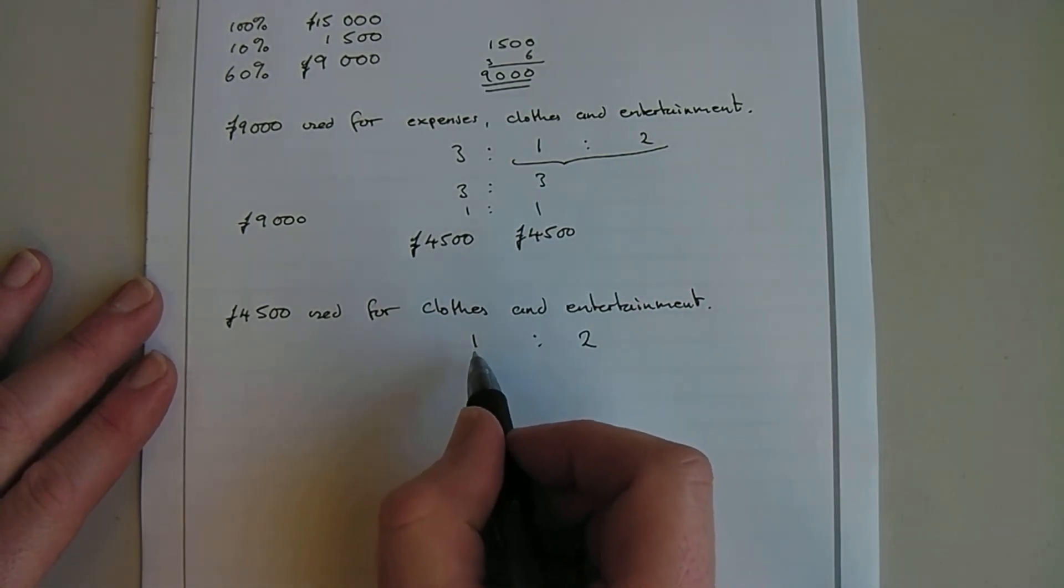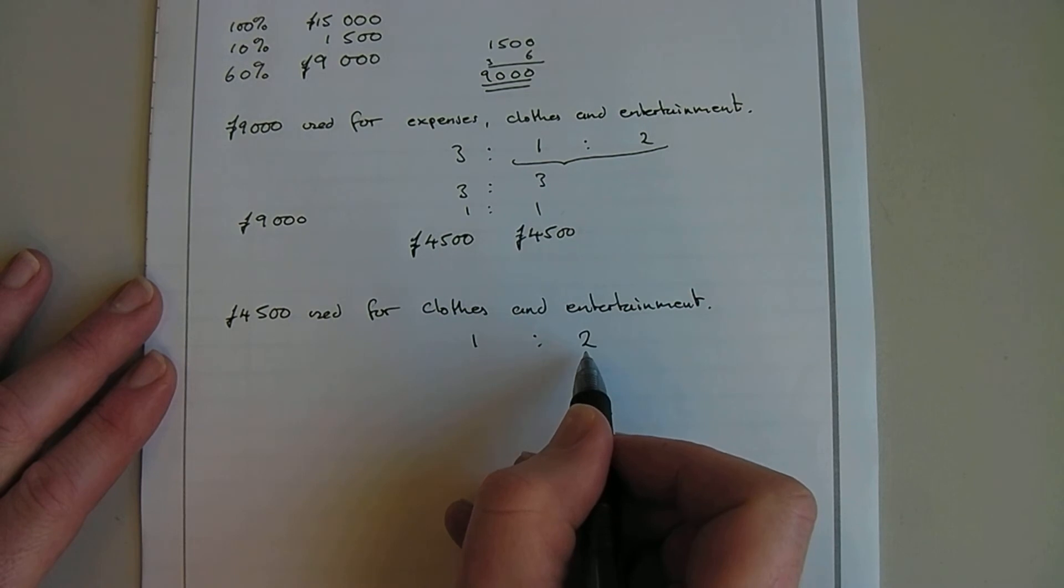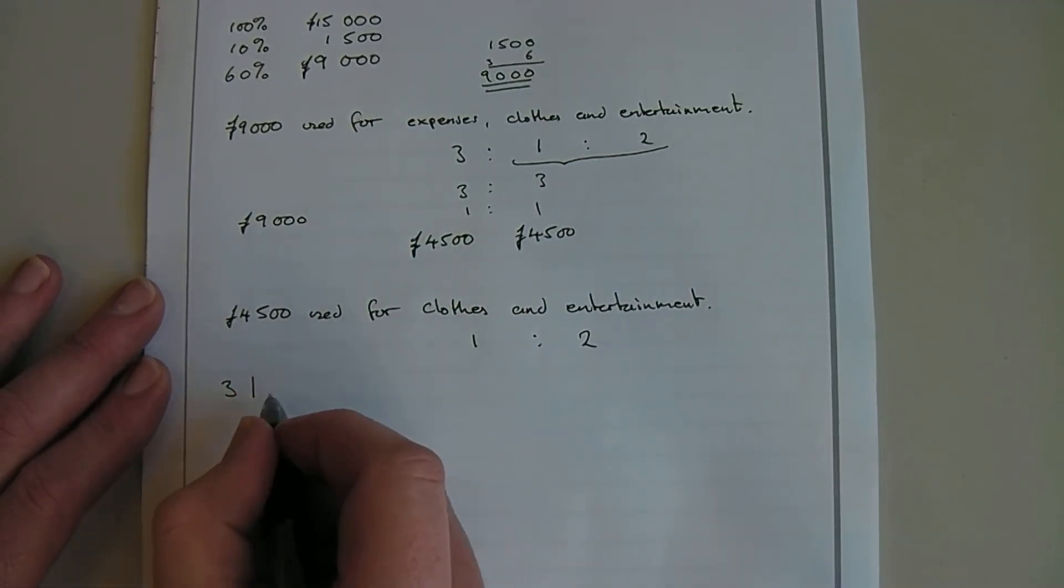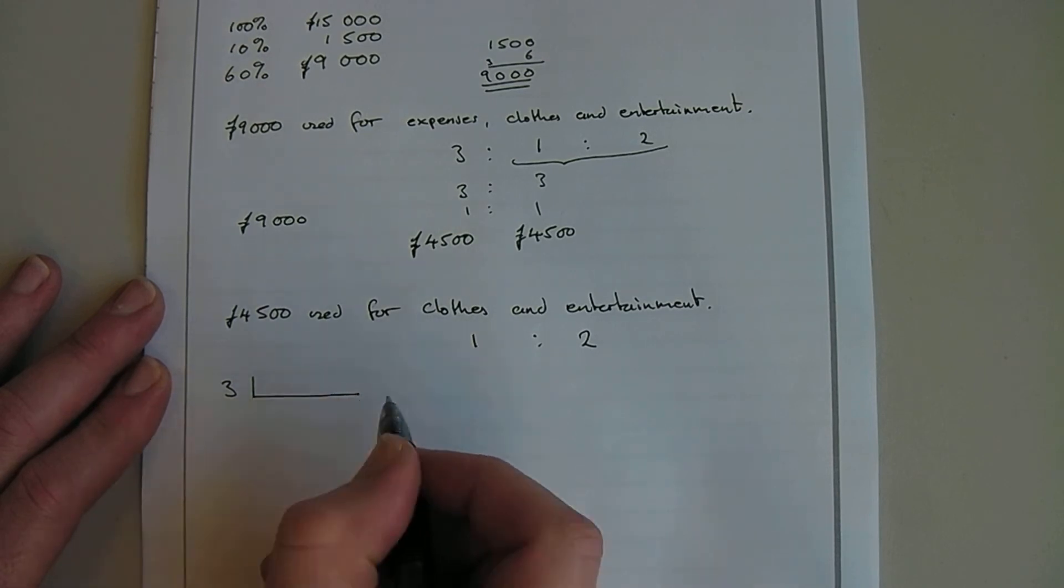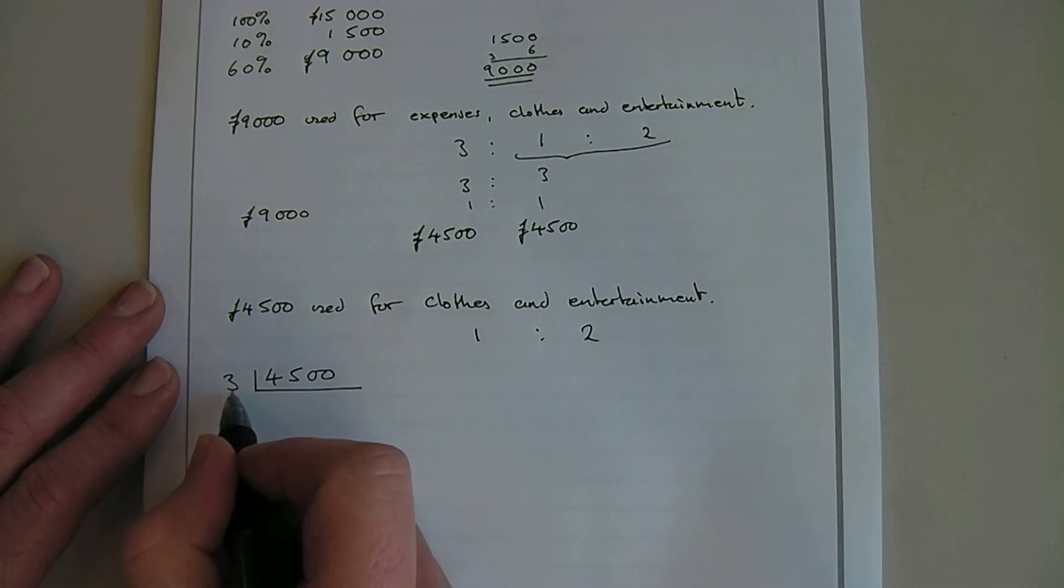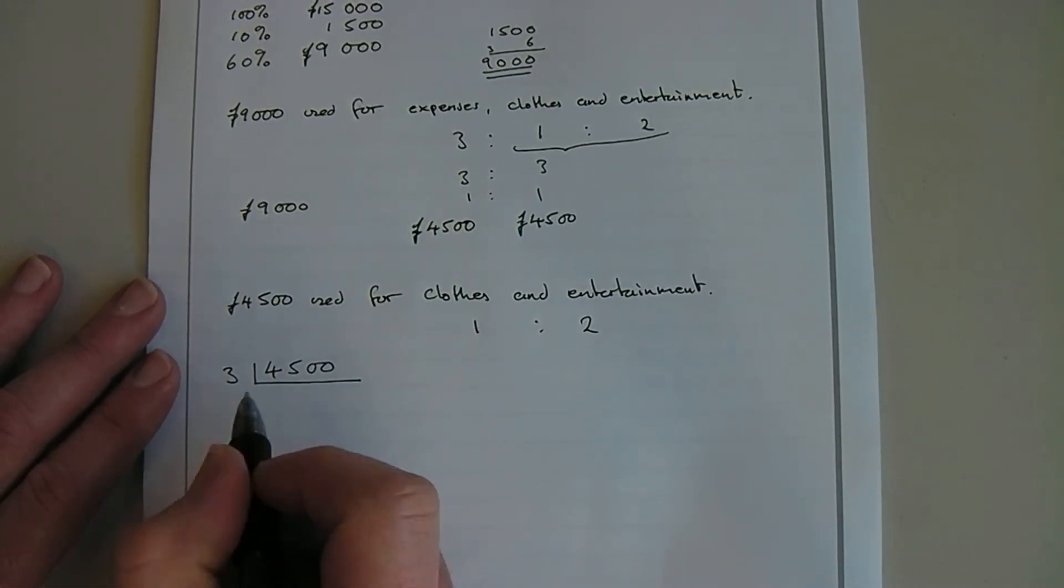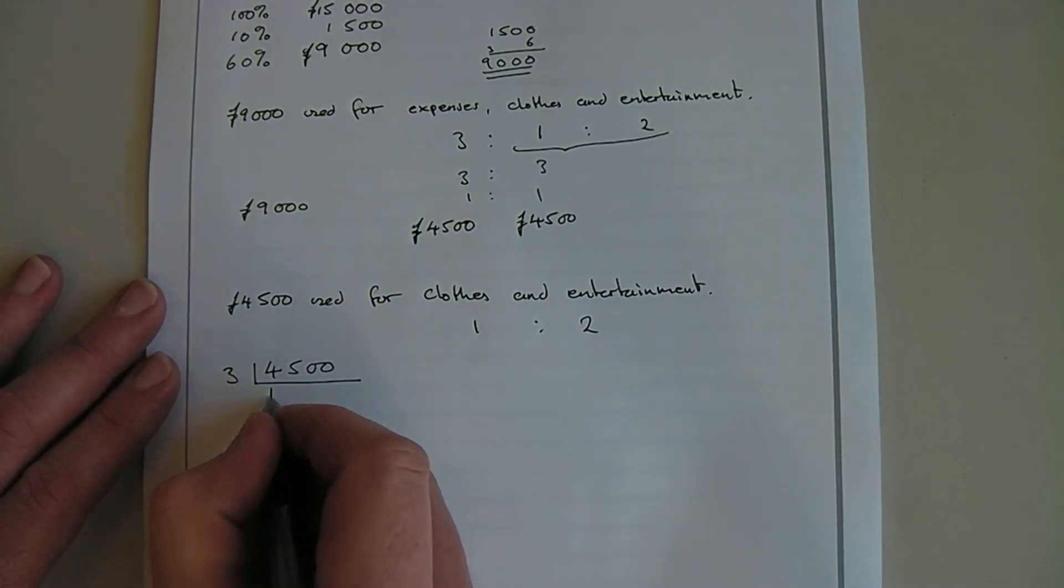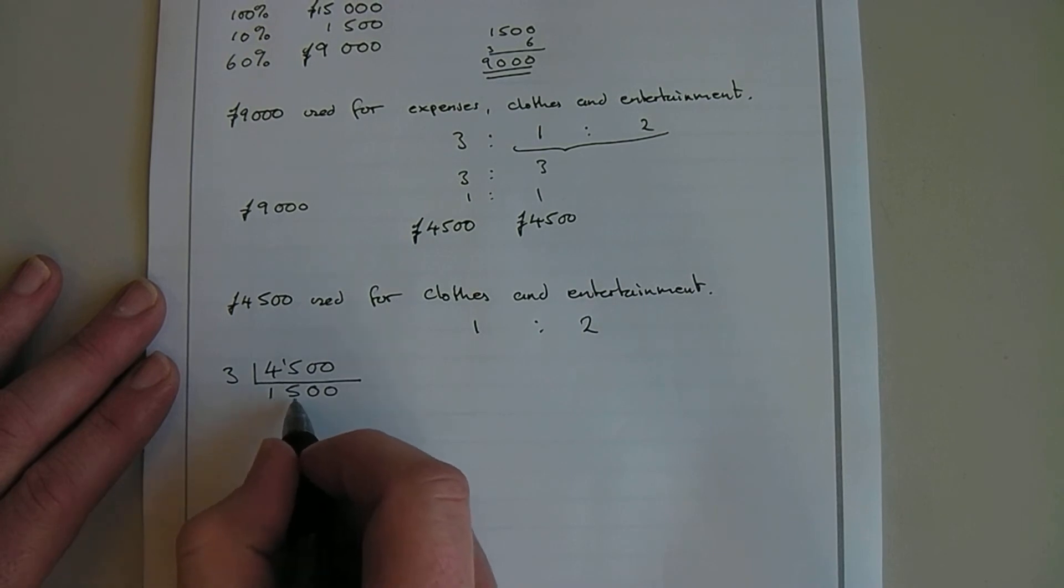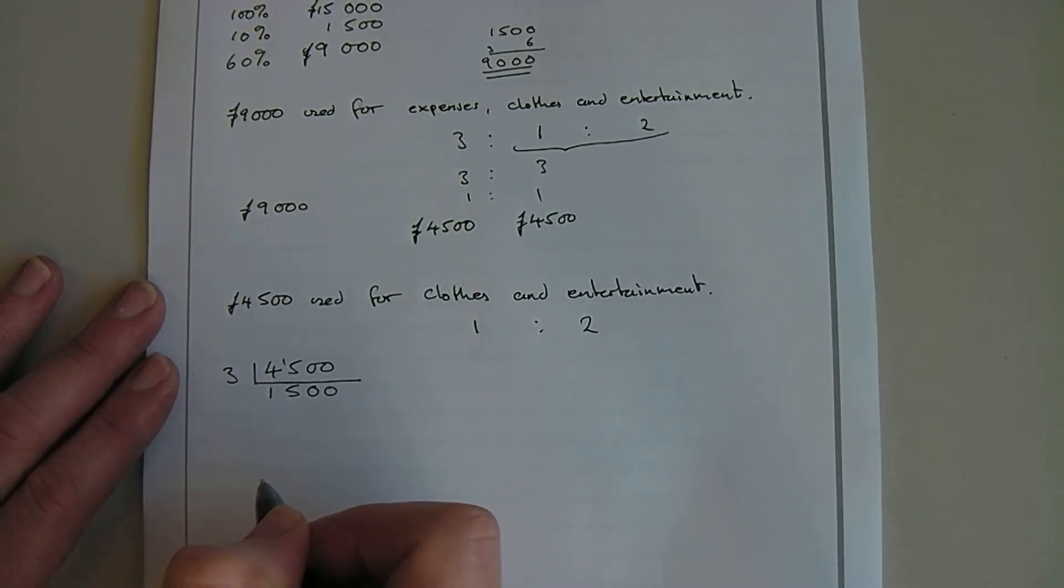So if I spend £1 on clothes, I'm spending £2 on entertainment, which means I'm spending in £3 blocks of money. So how many £3 blocks of money do I get if I divide mine? I'm just going to go upside down the way I do this. £4,500. So I'm dividing £4,500 into £3 blocks of money. 3 into 4 goes 1, carry 1, 3 into 15 goes 5, and put my zeros in. So I've got £1,500 blocks of £3.